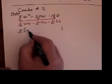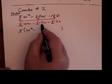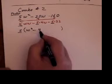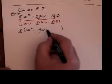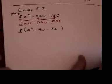The first term, I have a w times a w. The second term, I have the minus sign and a 4w. Third term, I have a minus sign and a 32.